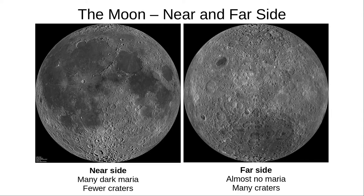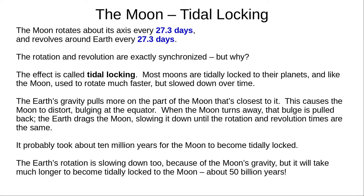Here we can see the difference between the near and far sides of the Moon. You should know that the near side has more Maria and fewer craters. I'll explain the reason for this in my video on the origin and structure of the Moon. So the period of the Moon's rotation is the same as the period of its orbit: 27.3 days. You need to memorise this number — it is not given to you in the exam, and you may be asked to write it down.